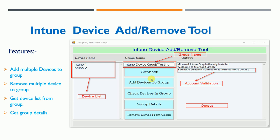There are buttons for the many actions you can take with the tool, and this is the output area. When you launch the tool, it will tell you whether the Microsoft Intune Graph module is installed, whether you are connected to Intune, and whether you have sufficient permissions to add or remove devices.